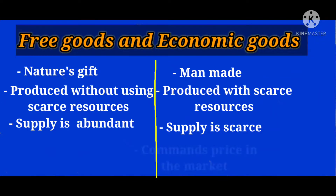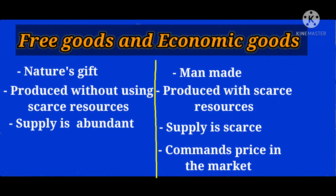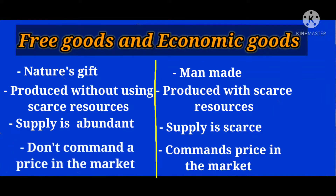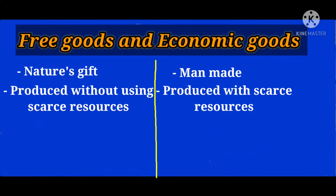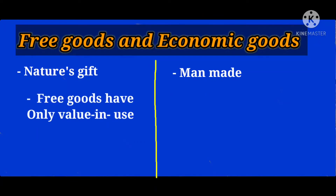Economic goods command a price in the market because they are scarce in nature and involve a cost of production. But free goods have no price, because there is no cost of production — they are nature's gift.